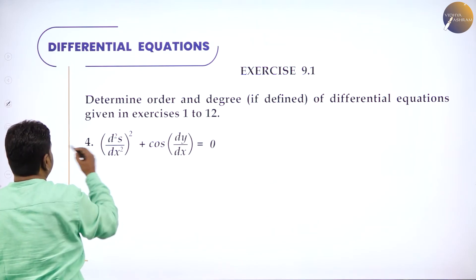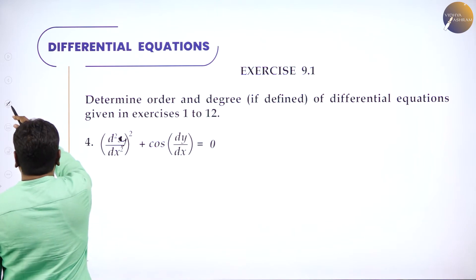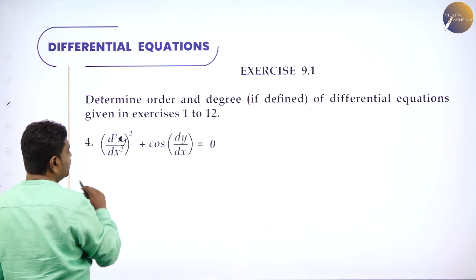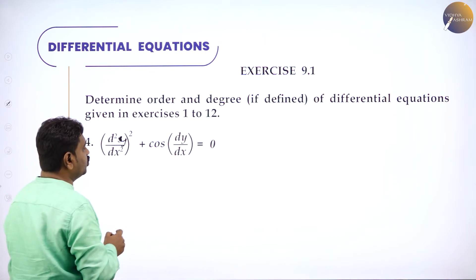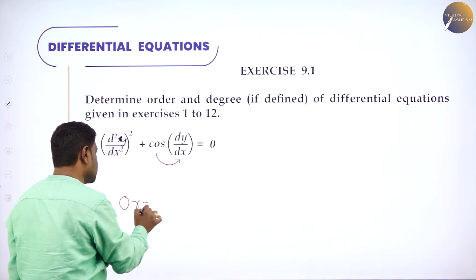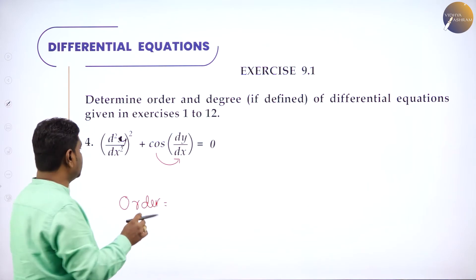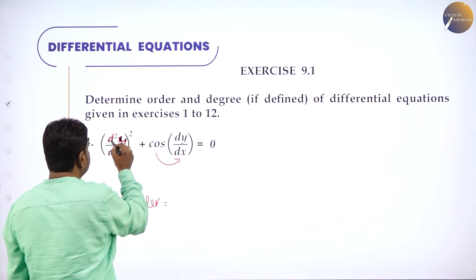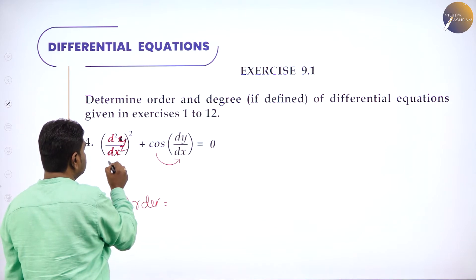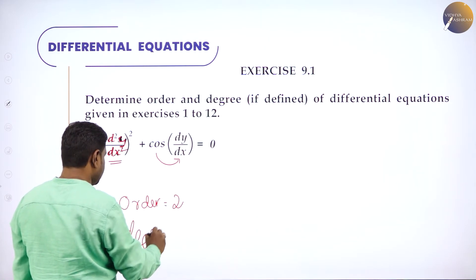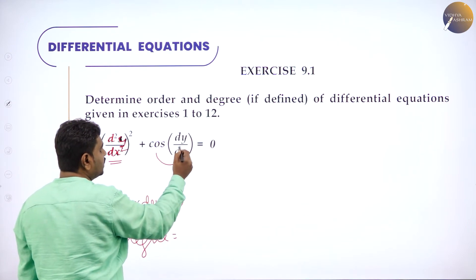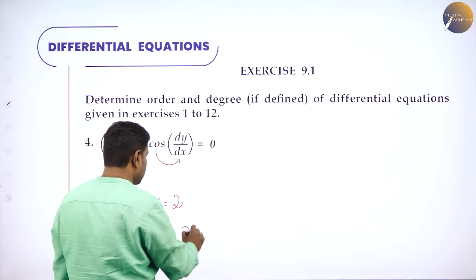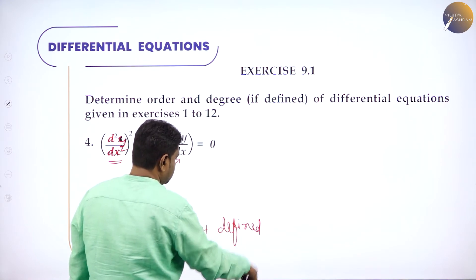Next problem involves d²y/dx² with a cosine function containing a derivative. Order: d²y/dx² is 2 times differentiated and dy/dx is 1 time, so order is 2. But degree: inside cosine we have a derivative. If in the whole equation derivative acts as an internal function, then degree is not defined.